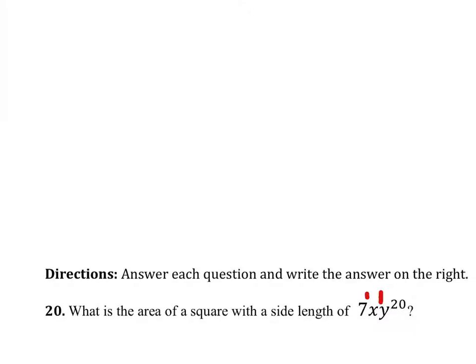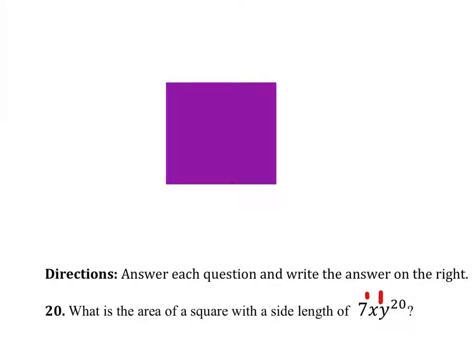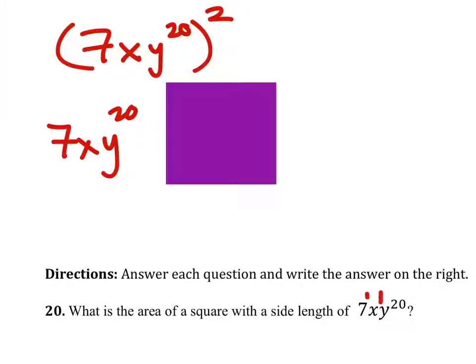So let's go ahead and draw ourselves a square. And if this has a side length of 7xy to the 20th, then to find the area, we would take 7xy to the 20th and we would simply square this.